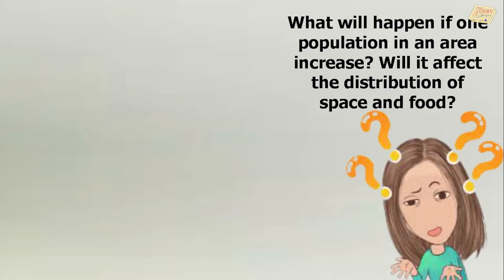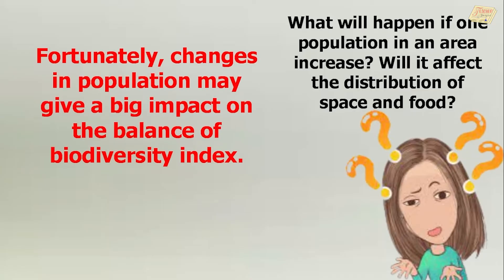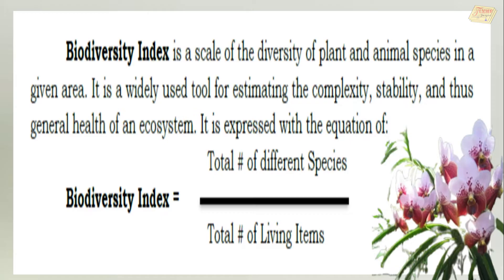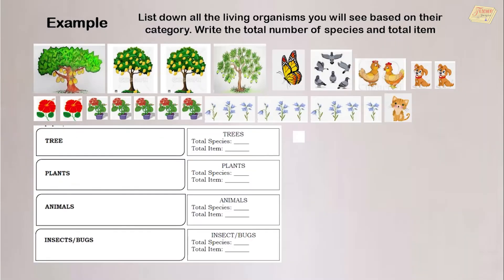Will it affect the distribution of space and food? Changes in population may give a big impact on the Balance of Biodiversity Index. But what is the Biodiversity Index? It is a scale of the diversity of plant and animal species in a given area. It is a widely used tool for estimating the complexity, stability, and general health of an ecosystem. It is expressed with the equation: Biodiversity Index = total number of different species divided by total number of living items.